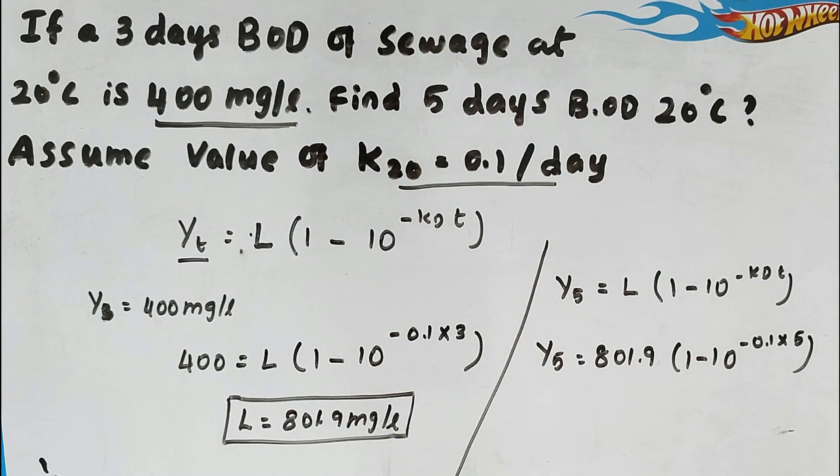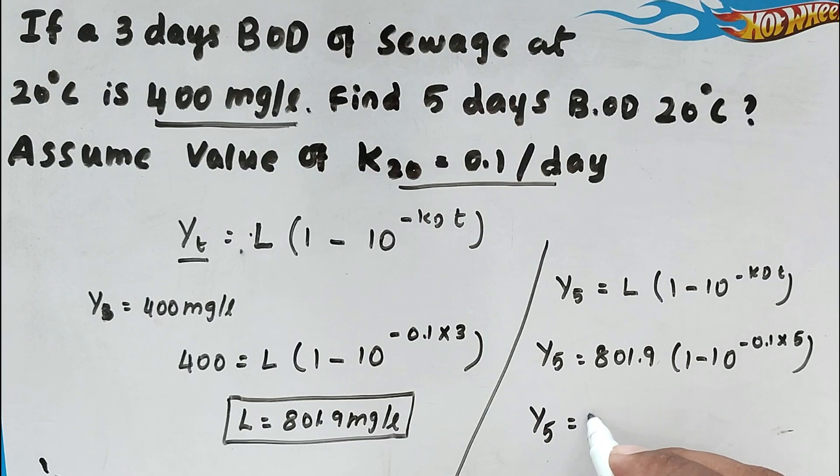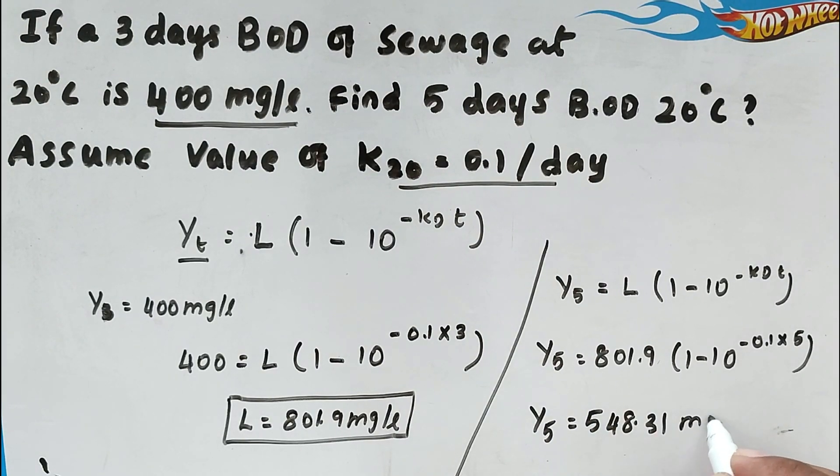So the 5 days BOD we have to find out. So now solving this we got the value Y5 equal to, the value will be 548.31 milligram per liter.